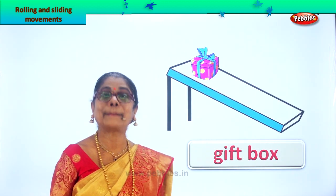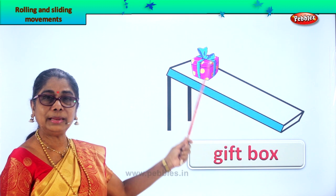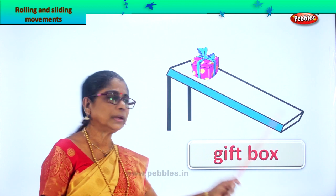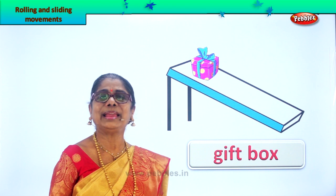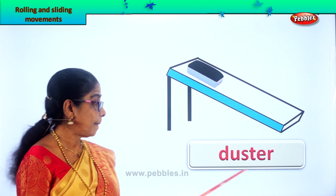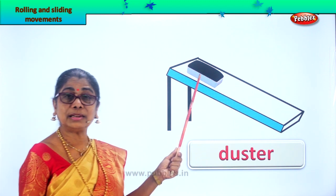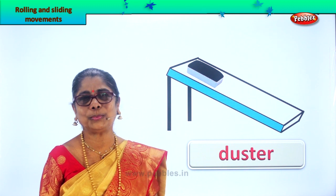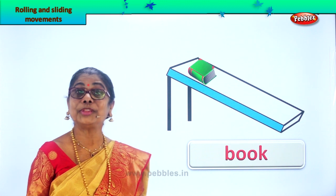Next, what else? Look at this picture. If you keep a box over there — a gift box or any box — it will just keep sliding down because this place is slanted. This board is slanted — you can slide down. Next, look what you have here: a duster, to wipe the board. A duster also, if you just keep it over there, it will come down sliding. A duster can come sliding down.